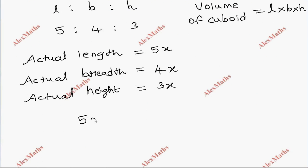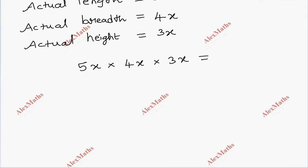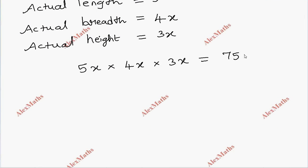So 5x into 4x into 3x equals the volume given in the question, which is 7500 cm³.